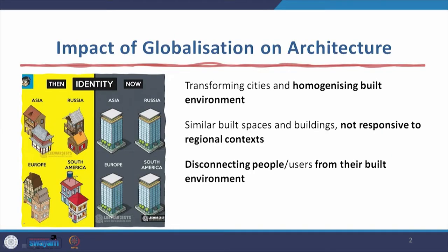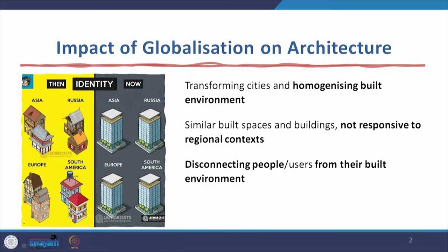What has been the impact of globalization on architecture? In India post-1991, transforming cities has led to a homogenizing built environment globally. There are similar built spaces and buildings that are not responsive to regional context. In the past, architecture in Asia was different from Russia, from Europe, and from South America — each one had its own regional identity.